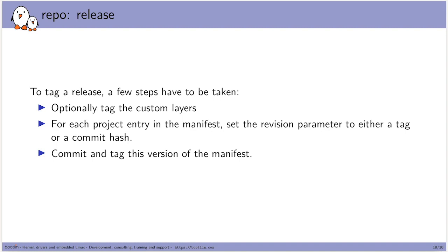To tag a release, you optionally tag your custom layers, then for each project entry in your manifest you set the revision parameter to either a tag or a specific commit hash, and finally you commit and tag that version of the manifest. This ensures that your tagged manifest will always download exactly the same sources.